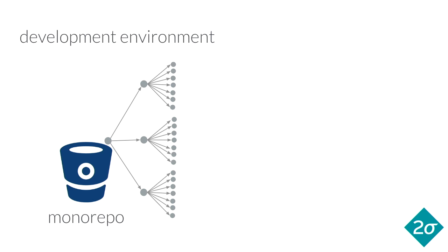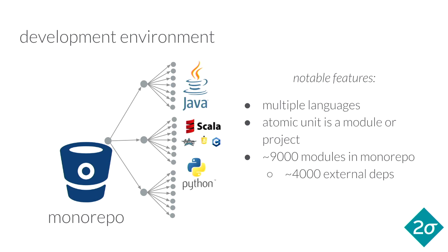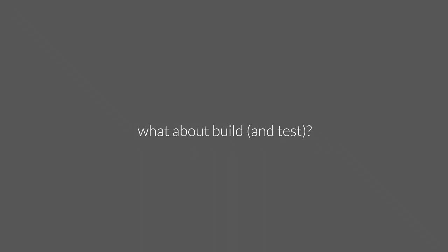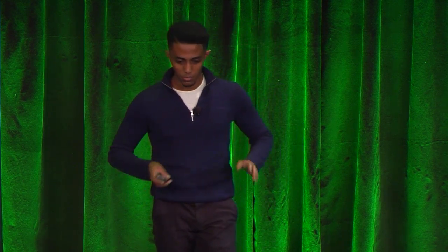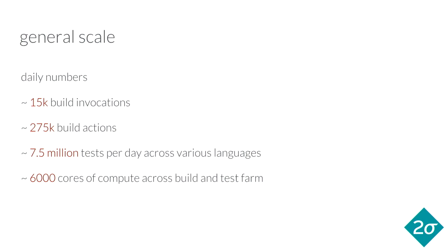Let's get a sense of what our development environment is like right now and why we want to switch. We have a very large monorepo, and we maintain multiple different languages — primarily Java and Python. We maintain our own dependency management system, and we have a notion of a project which can have multiple different languages. We have about 9,000 modules or projects, 4,000 of which are external dependencies, some pre-compiled and some built from source. Each day we do roughly about 15,000 build invocations, which breaks down to about 275,000 build actions. Over the entire company, we do about 7.5 million tests, spread across a remote build and test farm with about 6,000 cores.